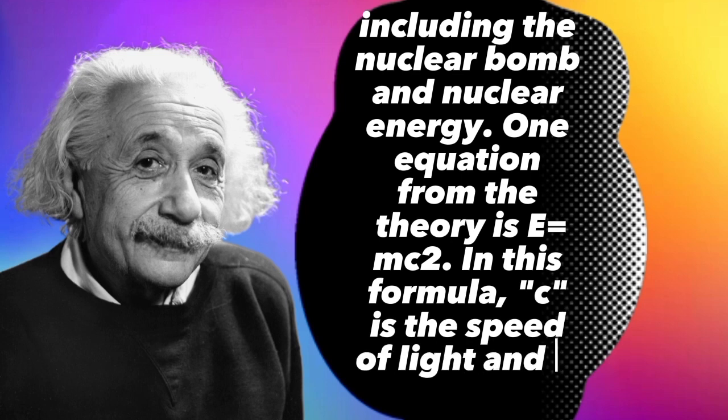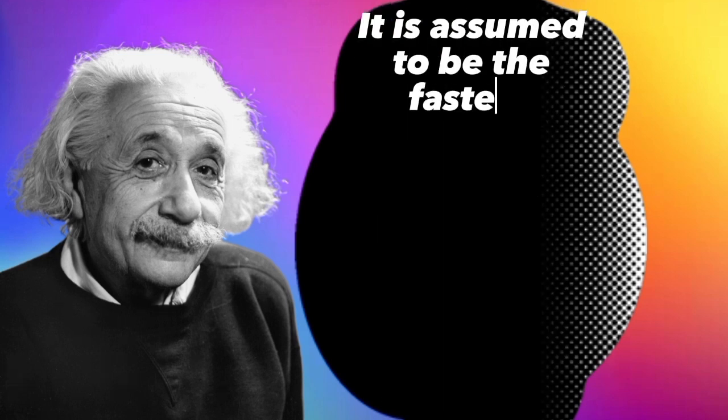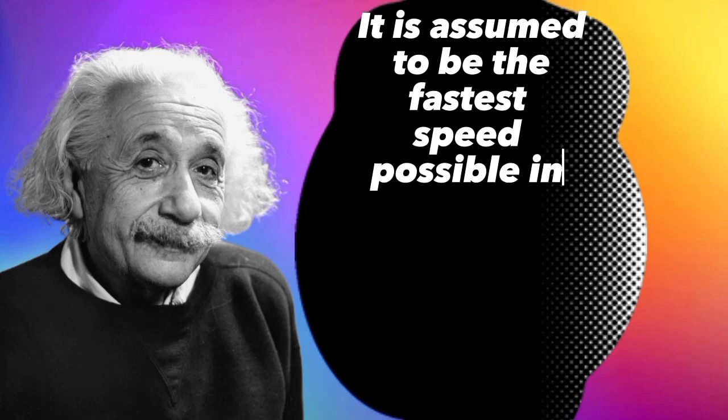In this formula, c is the speed of light and is a constant. It is assumed to be the fastest speed possible in the universe.